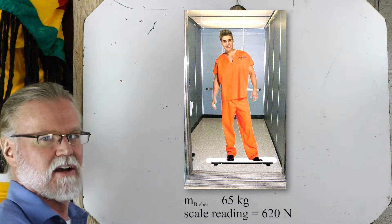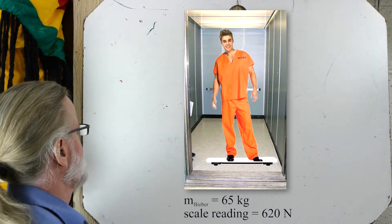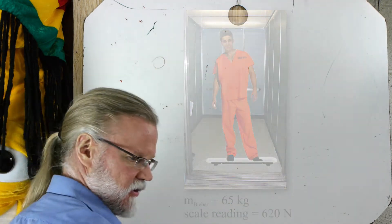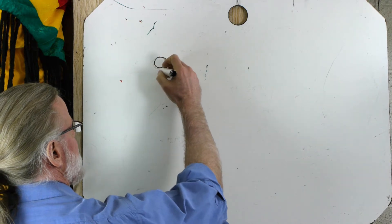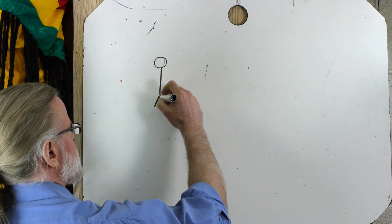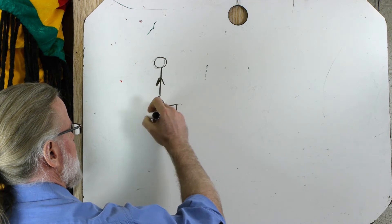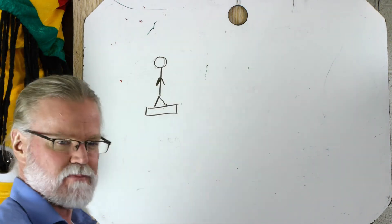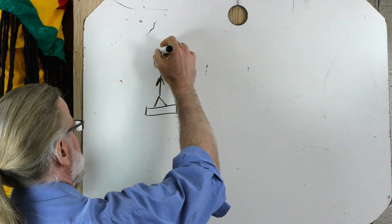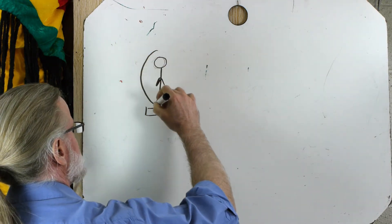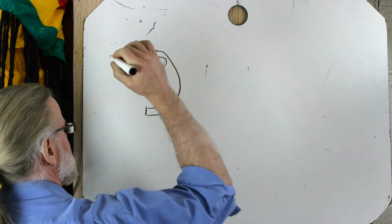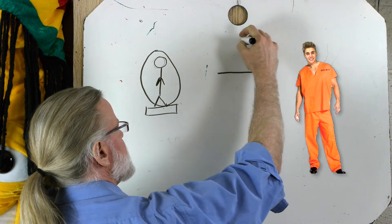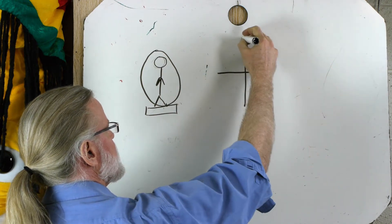So here we have Justin Bieber and he's standing on a... that's no good. Someone's standing on an elevator. In this case, it's Justin Bieber in an elevator standing on a bathroom scale. So let's draw a free body diagram. We're going to circle the object of interest. In this case, we're interested in Justin Bieber. And we will draw a free body diagram.